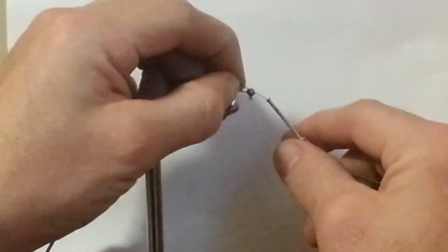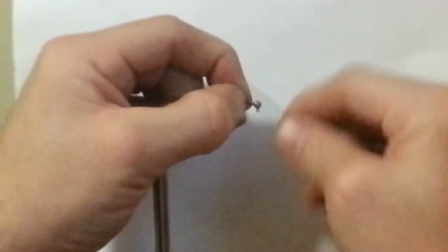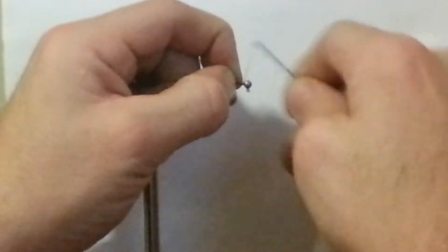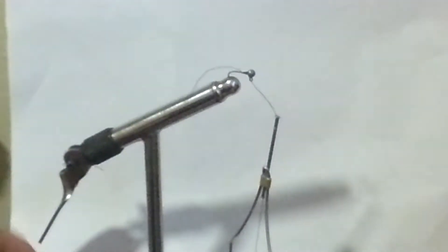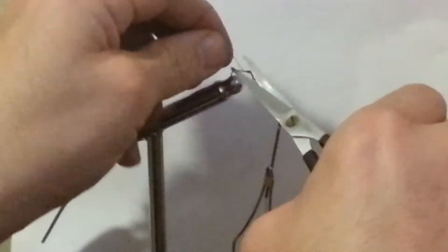Starting with the thread and the bobbin, make a few wraps around the shank of the hook to get everything anchored into place. Then trim off that tag.